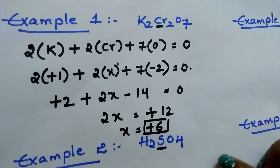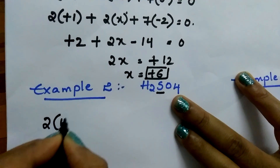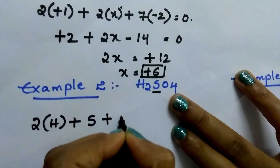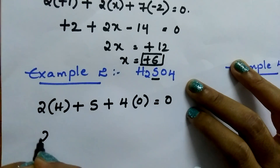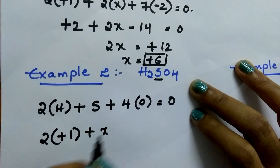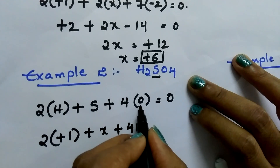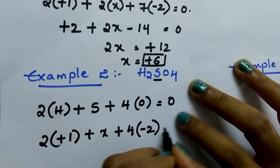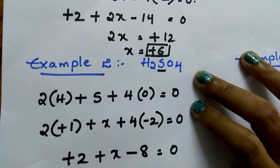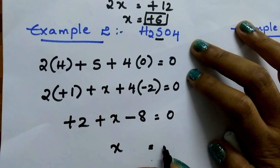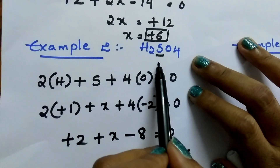Easy, right students? Now try to find the oxidation number of sulfur in sulfuric acid. 2 times H plus S plus 4 times O equals 0. Hydrogen oxidation number is always plus 1, so: 2 times plus 1, plus X (sulfur), plus 4 times minus 2 equals 0. This gives plus 2 plus X minus 8 equals 0, so X equals plus 6. Plus 6 is the oxidation number of sulfur in sulfuric acid.